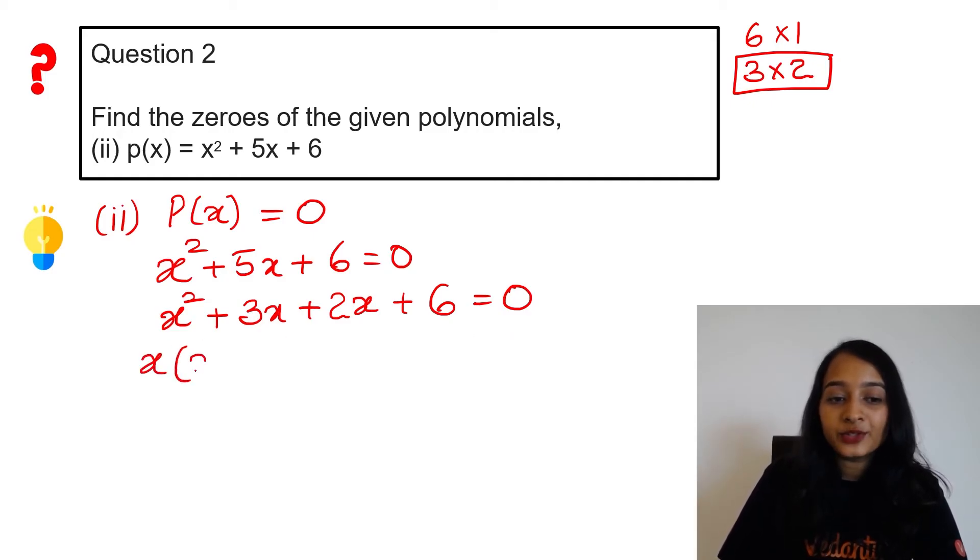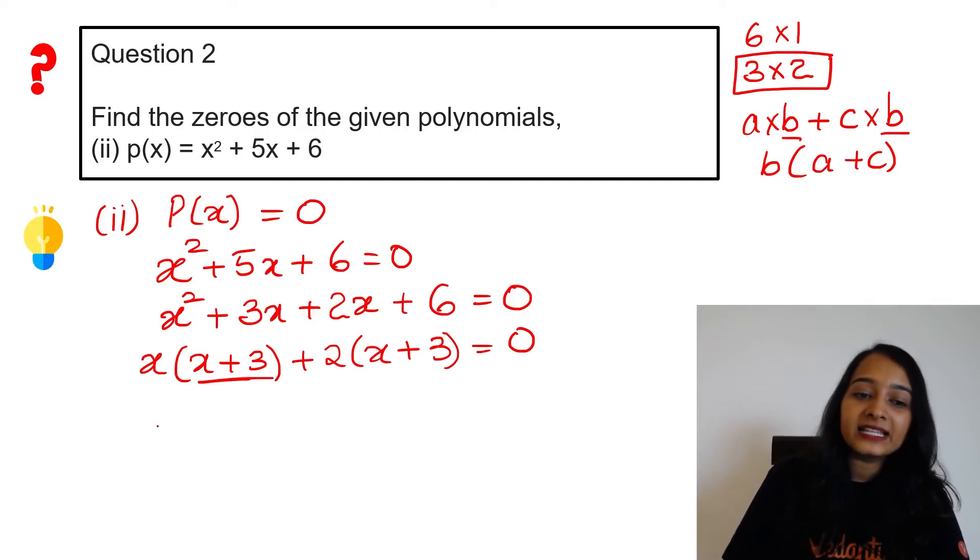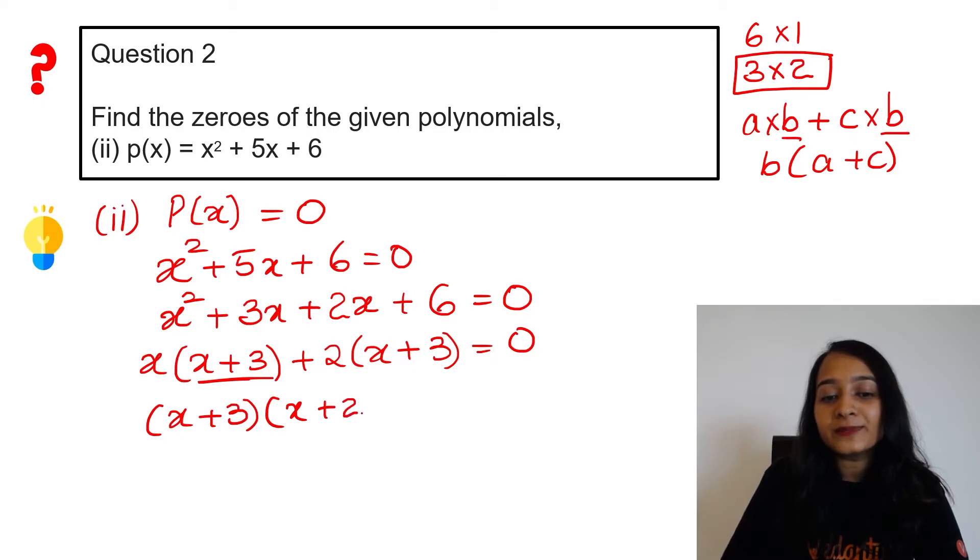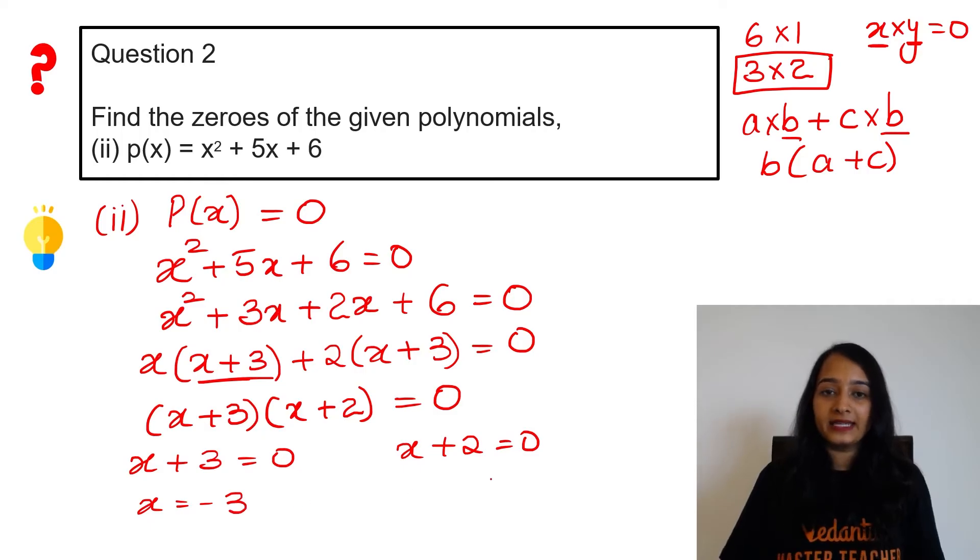So I am going to split my 5x as 3x + 2x. Splitting the middle term. x² + 3x + 2x + 6 = 0. Here we take x common, which gives x(x + 3). Here we take 2 common, which gives 2(x + 3) = 0. Now take (x + 3) common. Using a·b + c·b = b(a + c), we get (x + 3)(x + 2) = 0.